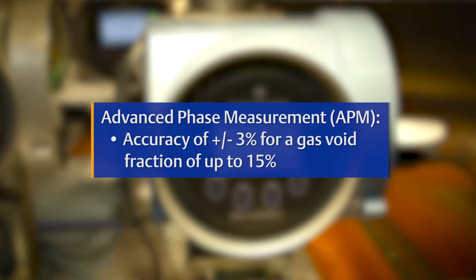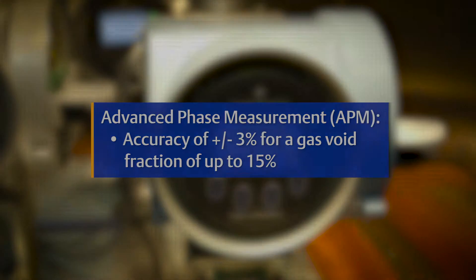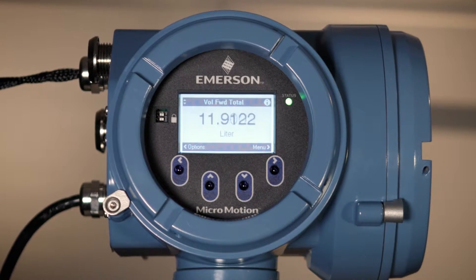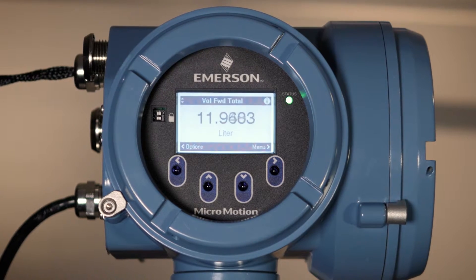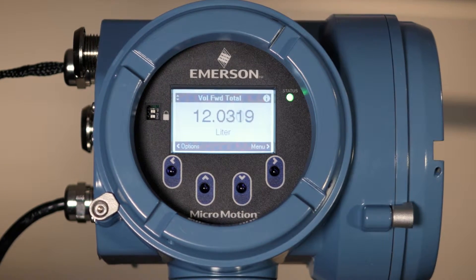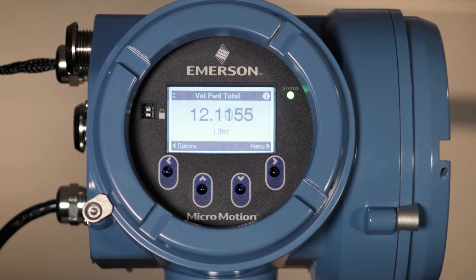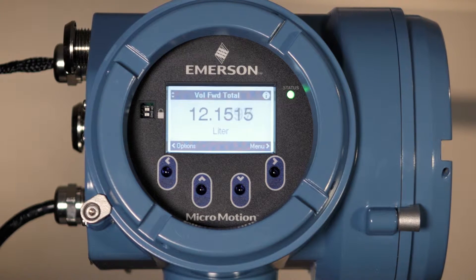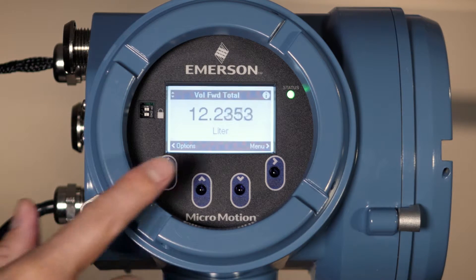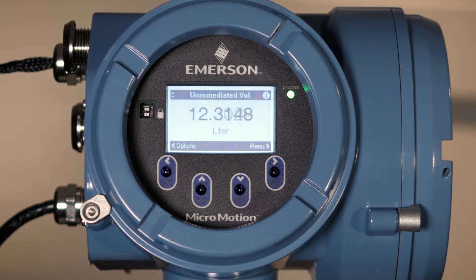APM is capable of providing an accuracy of plus or minus three percent for a gas void fraction up to 15 percent. When multi-phase flow is present, the software corrects the mass and volumetric flow parameters and provides corrected values as an output. These values are also referred to as remediated flow values.